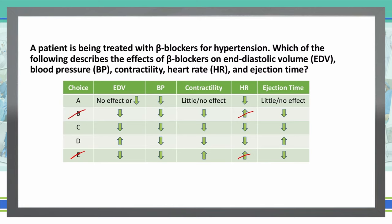We know beta blockers are used for hypertension, so they're going to cause a decrease in blood pressure. But all of these remaining answer choices have a decrease in blood pressure, so that can't rule any further out.